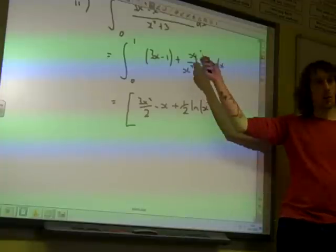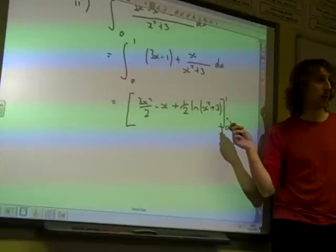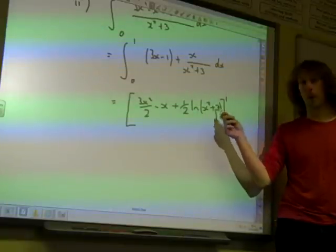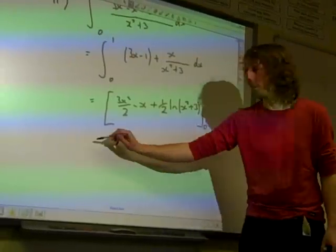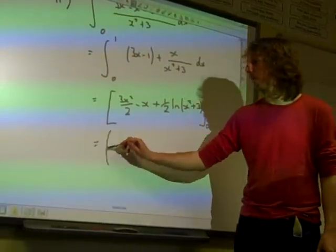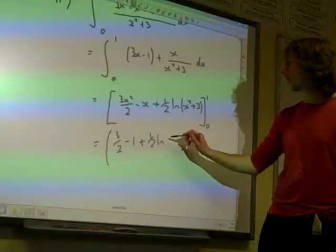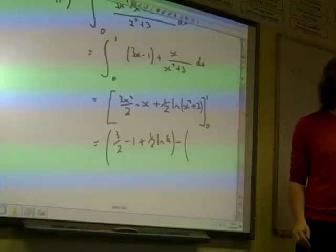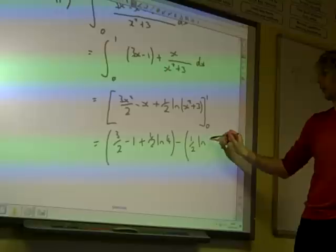When we use natural log as our answer, we should put the modulus in there. But in this case, x² has to be positive anyway, so the modulus is redundant. If we put the numbers in, we have 3/2 - 1 + (1/2)ln(4). Taking away the lower limit (which gives 0 for the first bit), we end up with (1/2)ln(3).